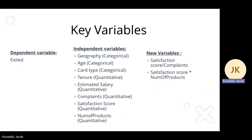Lastly, I'd like to discuss key variables. Based on general expectations, variables such as customer satisfaction score, complaints, and tenure are often considered crucial in influencing customer retention and reducing churn rate. These variables reflect customer experience, loyalty, and overall satisfaction with bank services, which are important factors in maintaining long-term customer relationships.